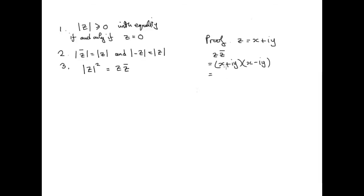Let's compute this product. The real part gives x times x, which is x squared. For the last terms: we get negative i squared times y squared. Since i squared equals negative 1, negative times negative gives positive 1, so we get plus y squared. The outside and inside terms disappear because this is a difference of squares pattern, so the imaginary part of the product is zero. We end up with the real number x squared plus y squared.